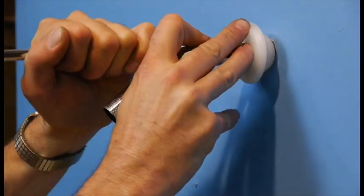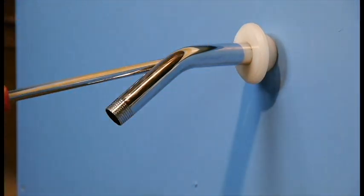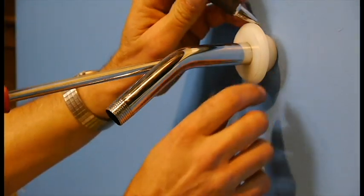Slide the clamp over the shower arm until the boss on the rear of the clamp touches the wall. Use a pencil to trace the shape of the boss on the surface.